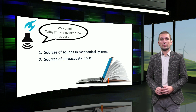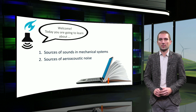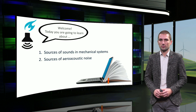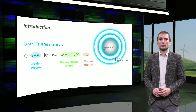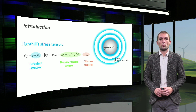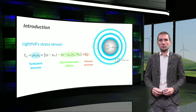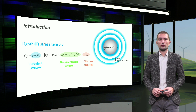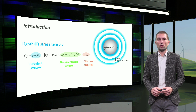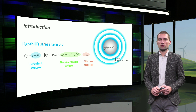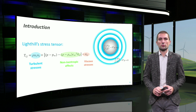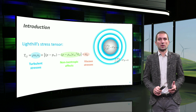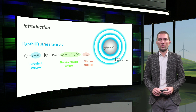Welcome to this video. Today, we are going to discuss the basic sources of noise for mechanical systems. We have learned so far that sound is a pressure perturbation that is propagated in waveform. The Lighthill sensor concept gives the opportunity to explore all possible ways to produce sources of sound. This can happen with the presence of turbulent stresses, with non-isentropic effects, or with viscous stresses.